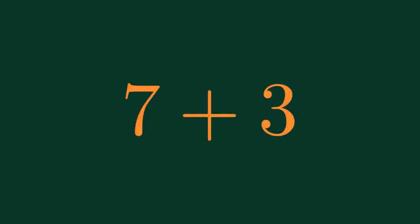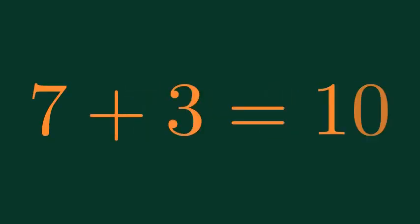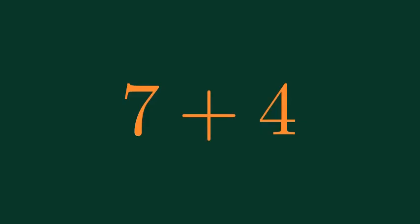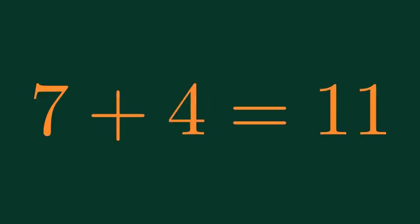What is 7 plus 3? 7 plus 3 is equal to 10. What is 7 plus 4? 7 plus 4 is equal to 11.